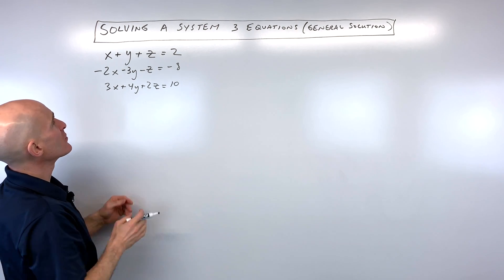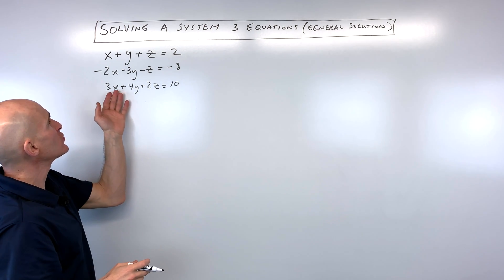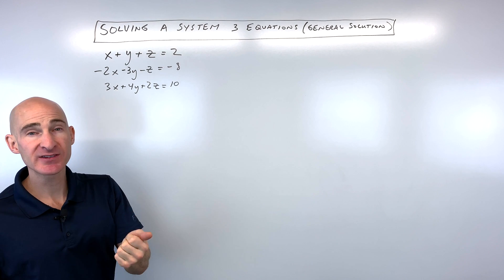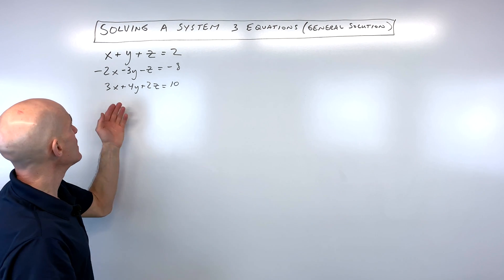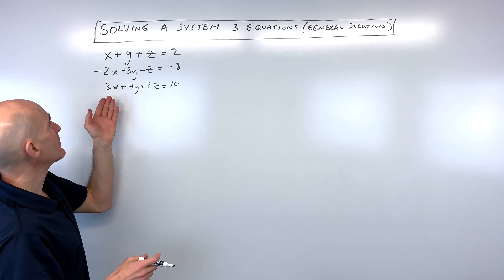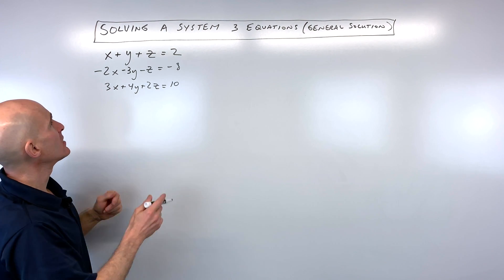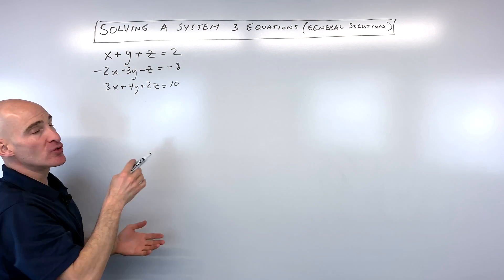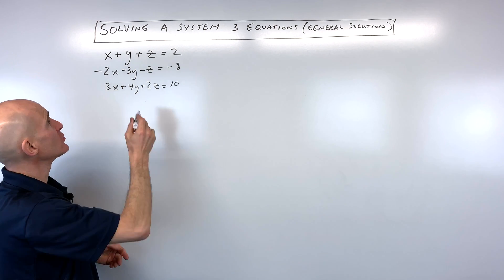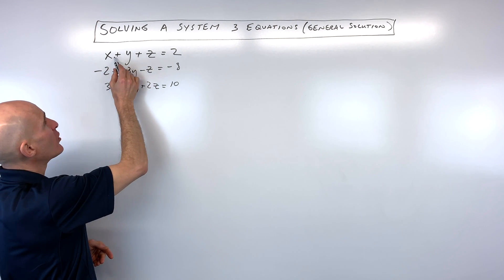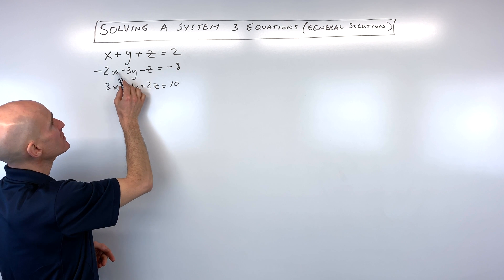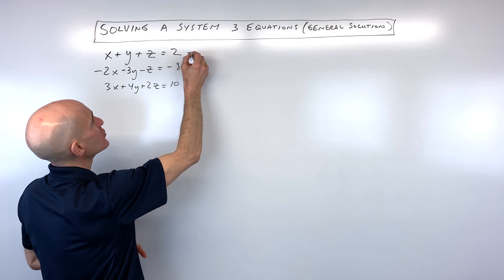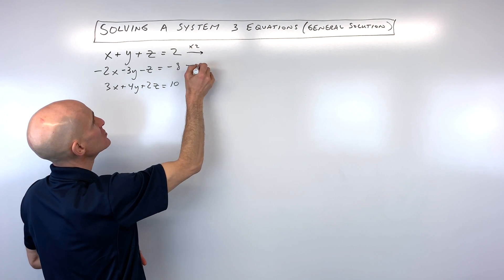When you solve a system of three variables and three equations, you want to pick one of the variables to eliminate — either the x's, the y's, or the z's. In this particular example, let's go ahead and eliminate the x's. To combine two of the equations so that the x's cancel, I'm going to multiply the top equation by two and the second equation by one.